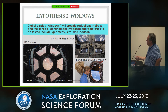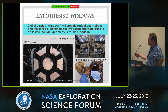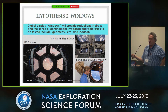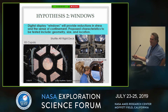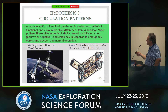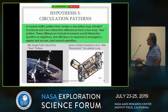Hypothesis two is windows. Digital display windows will provide reductions in stress and sense of confinement, and proposed characteristics to be tested include geometry, size, and location. One of the controls you'd want to test against are actual windows, but then you have the problem of what the crew would be looking at — we would have a problem with having the crew look out at a university parking lot. Hypothesis three: circulation patterns. A module traffic pattern that creates a circulation loop will elicit functional and crew interaction differences from a non-loop tree pattern or dead-end pattern, such as existed on Mir and exists on ISS. These differences include increased social interaction — positive or negative — and efficiency in emergency egress and normal operations.